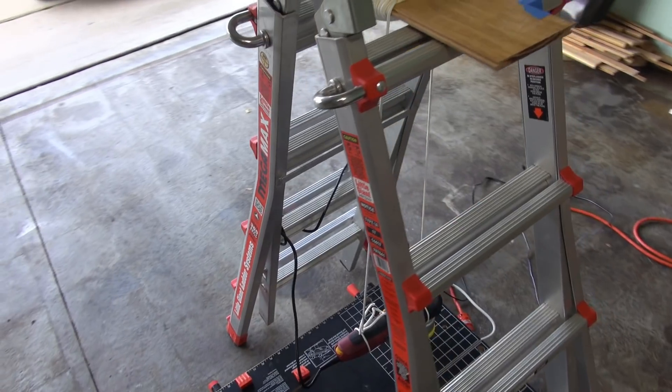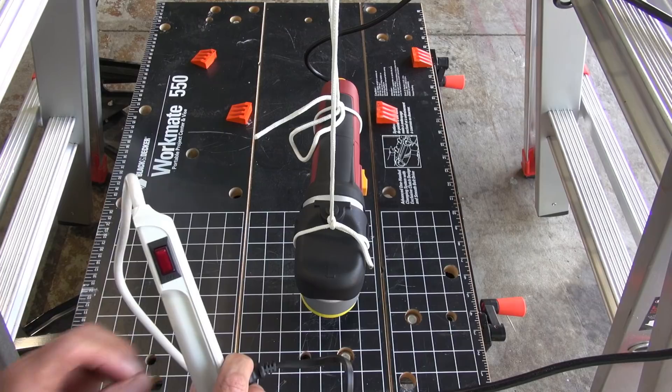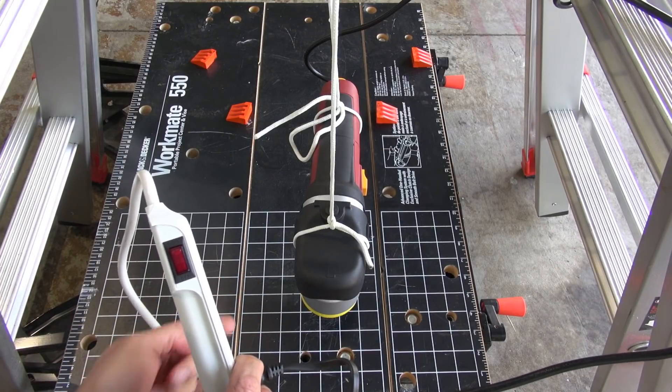And on the second test I'm going to be using everything the same but with modified counterweight and different washers on the Lake Country backing plate.